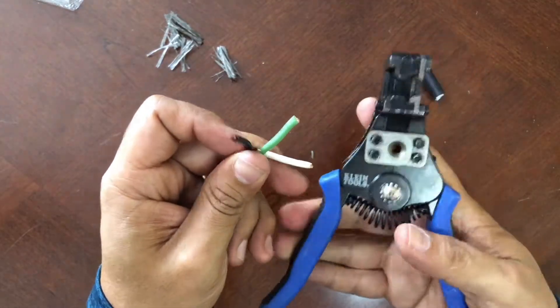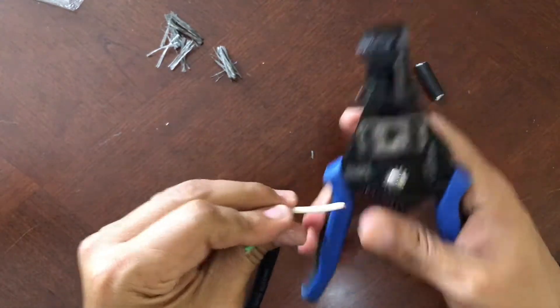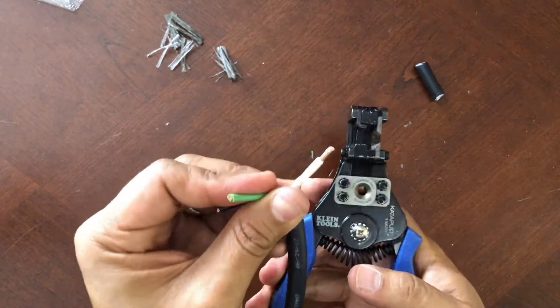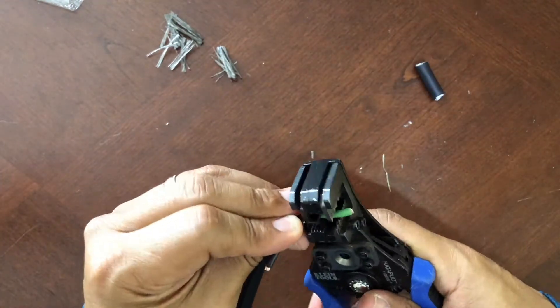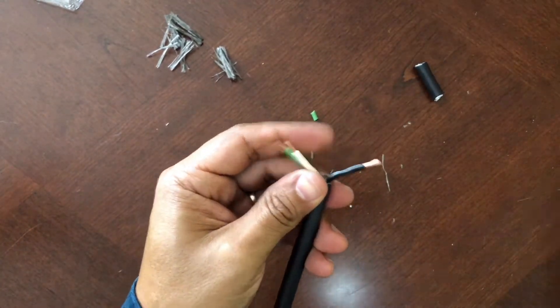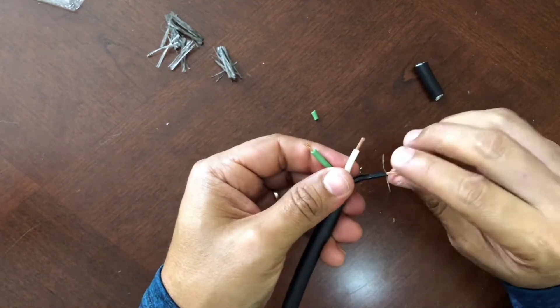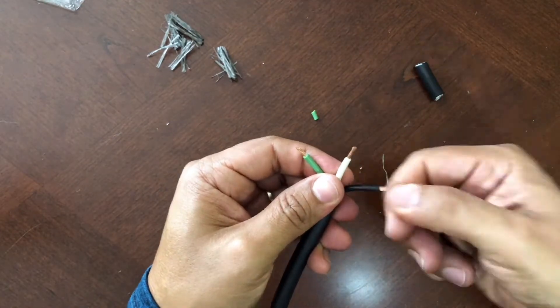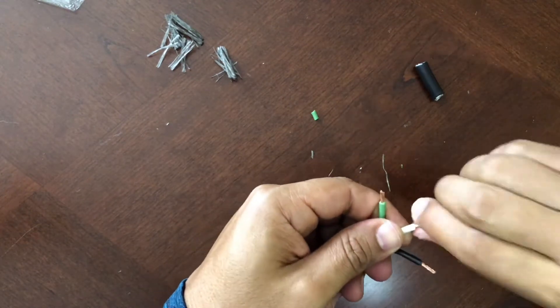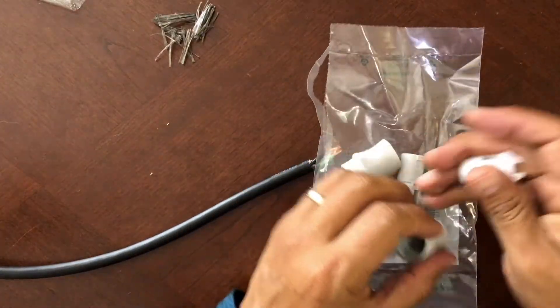The next step is to strip off a quarter of an inch of every cable: white, black, and green. Once this process is complete, twist every little cable to make sure they stay together. This will make it easier to insert the cables through the sleeve.